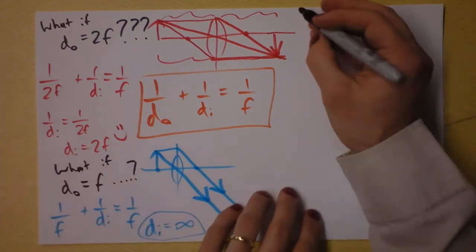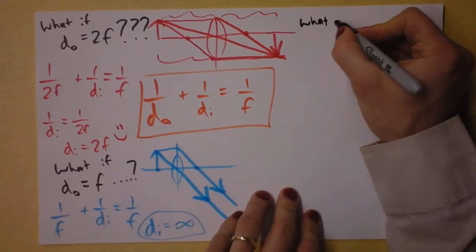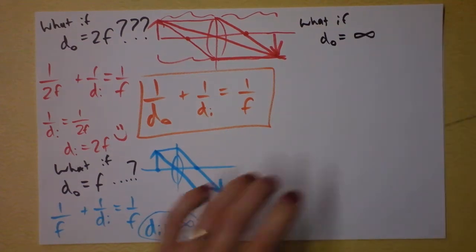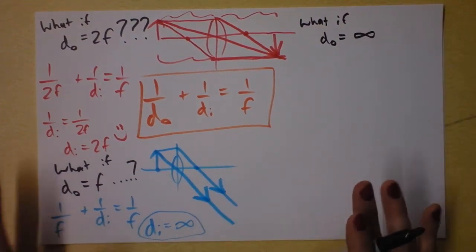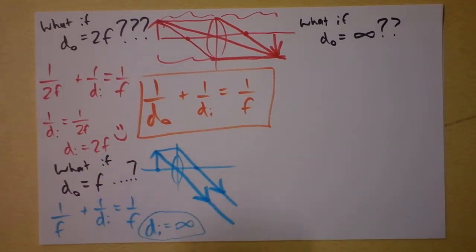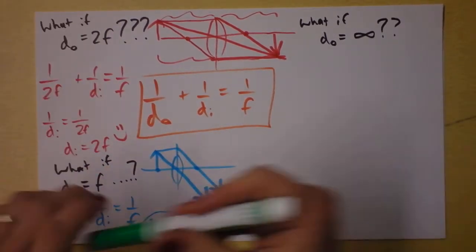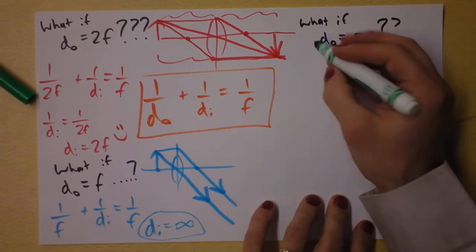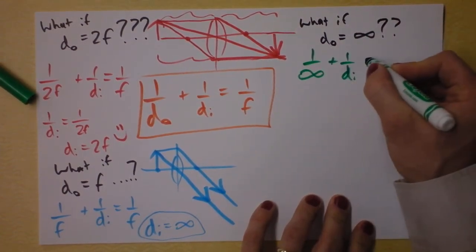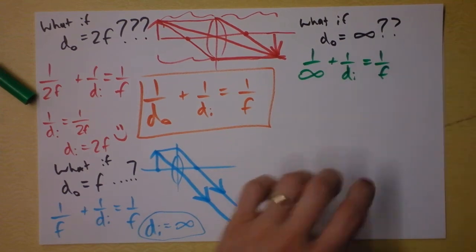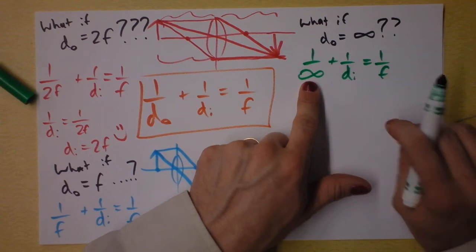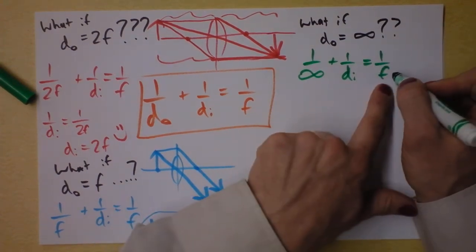Alright. Let's go green for the next one. Problem posed in black. What if the distance of the object is in fact infinity? You're beginning to see some beautiful symmetries here, so maybe you can predict what's going to happen. If the distance of the object is infinity, I'll say 1 over infinity plus 1 over di is 1 over f. Wait a second. 1 over infinity? That's just zero.